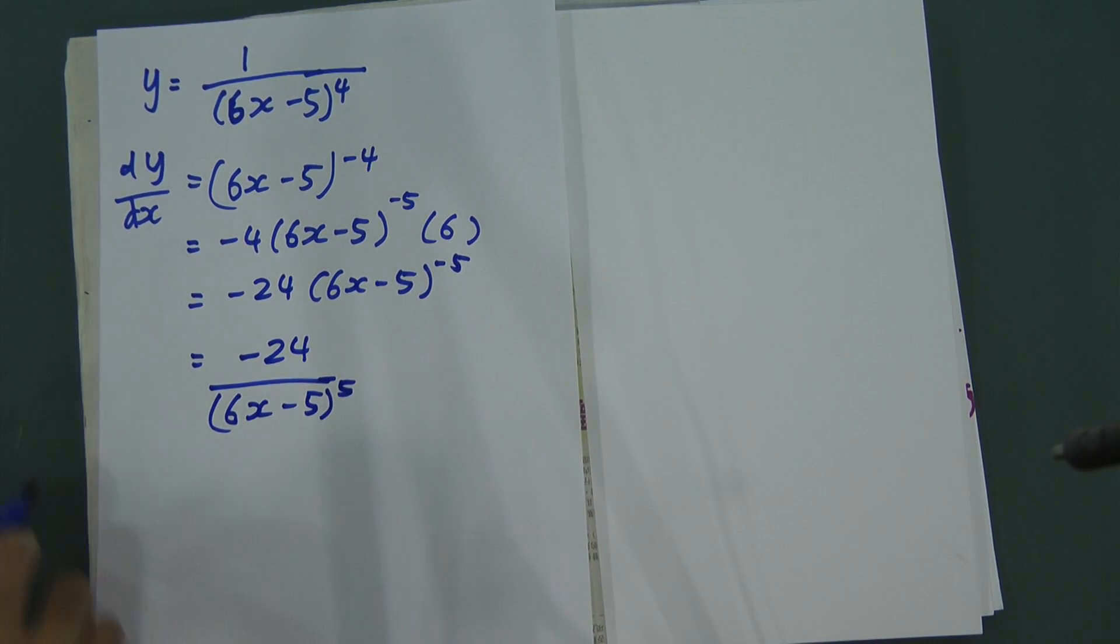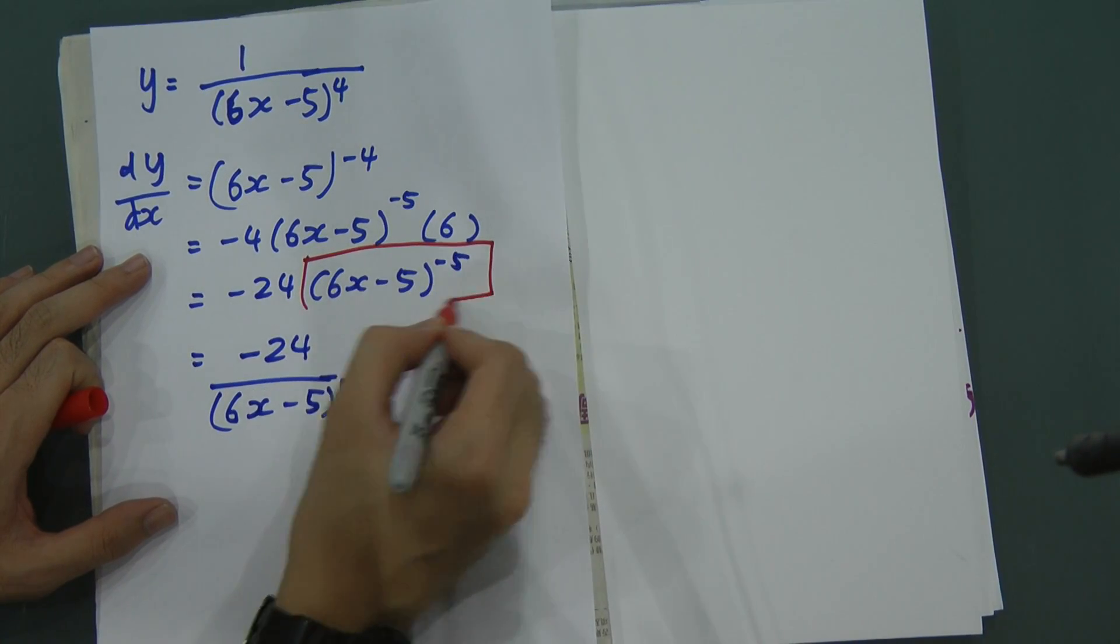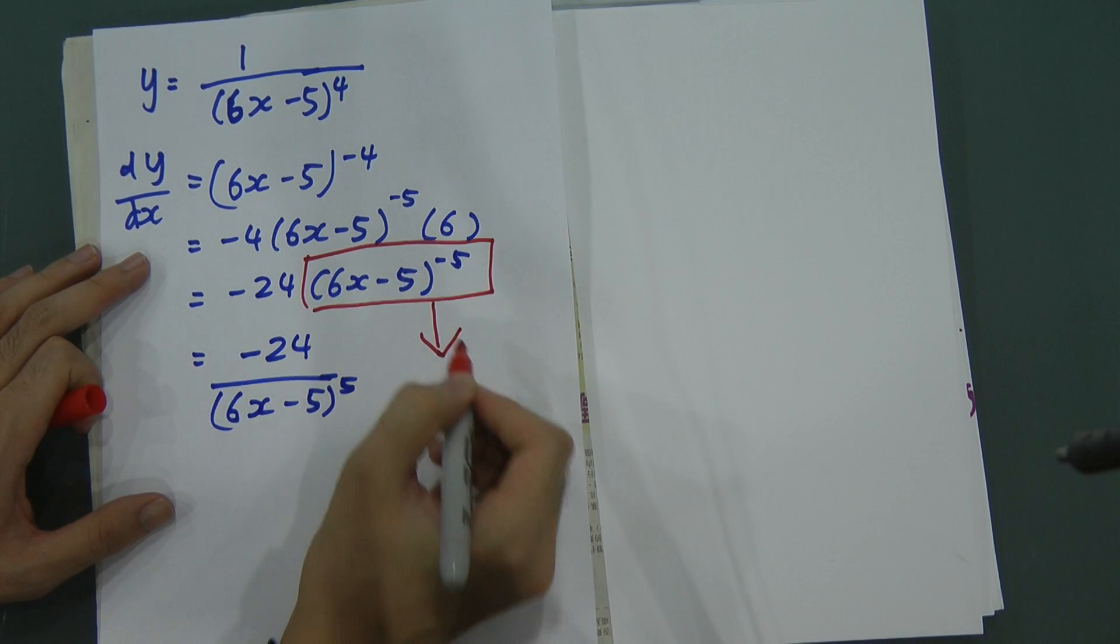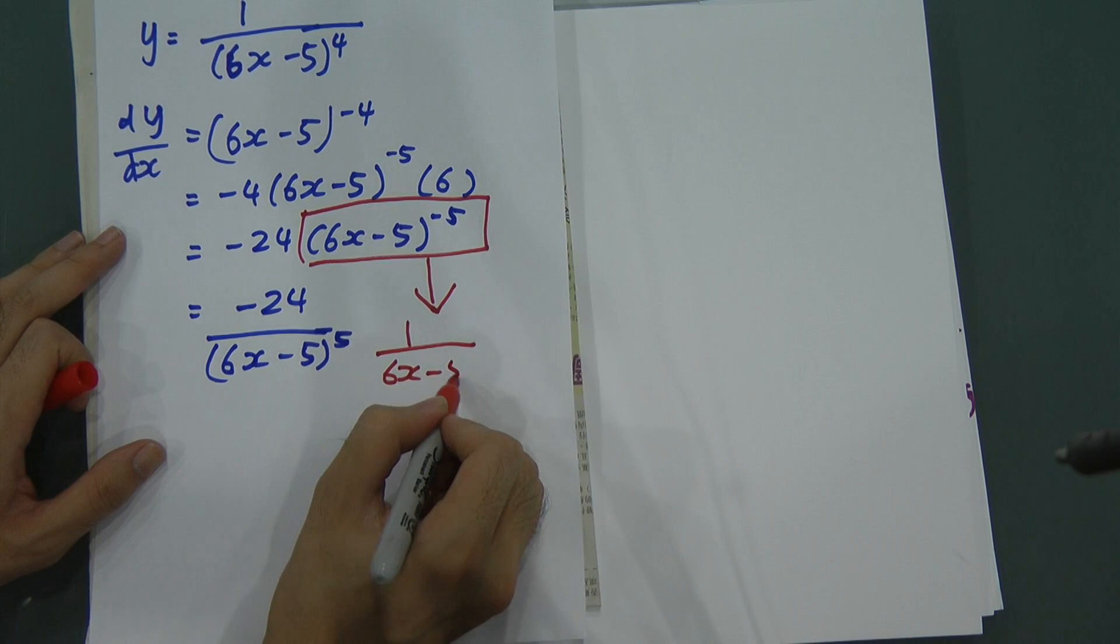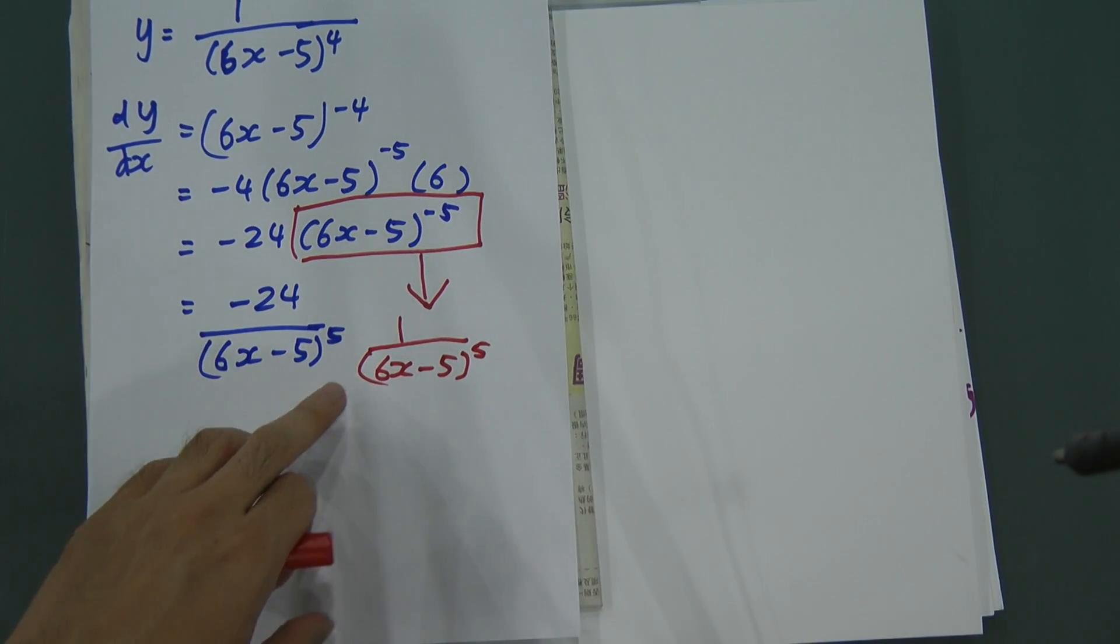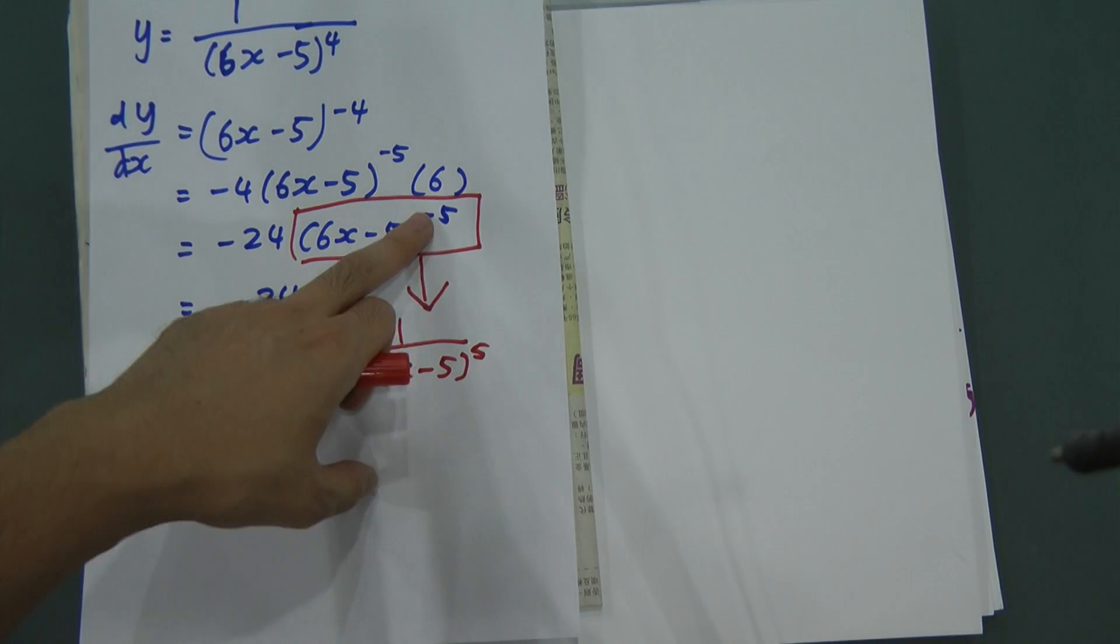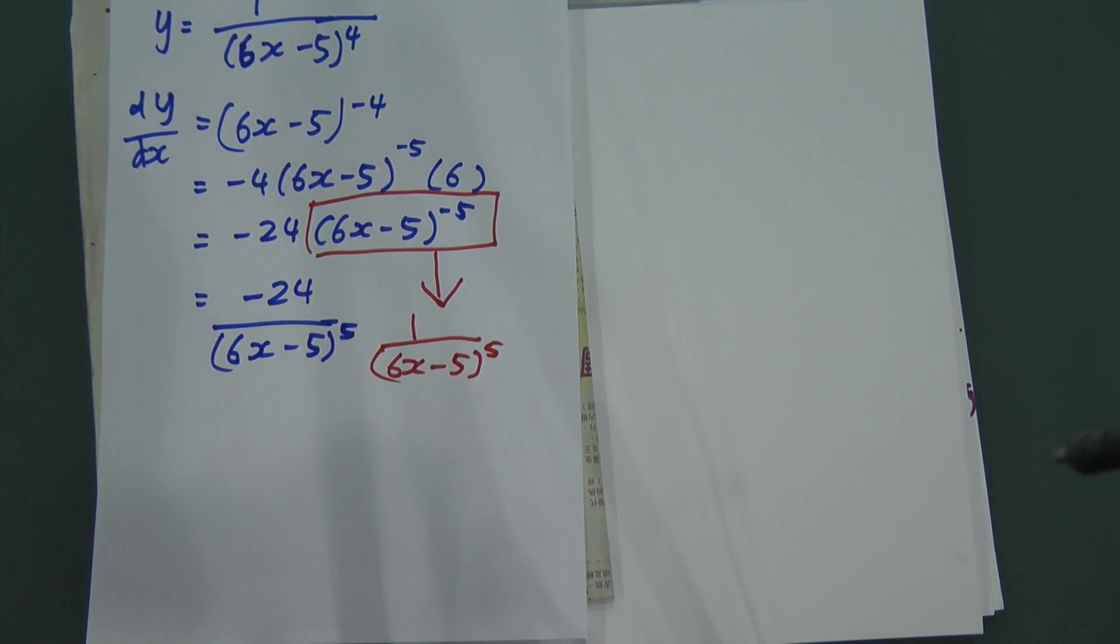Remember, for this one, you can change to 1 over 6x minus 5, power of 5. Because this one, we call it 6x minus 5, power of negative 5. Negative will mean 1 over in indices.